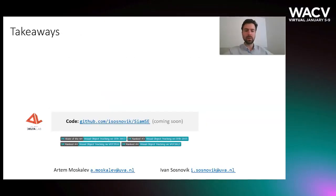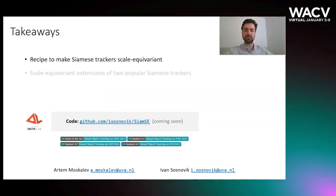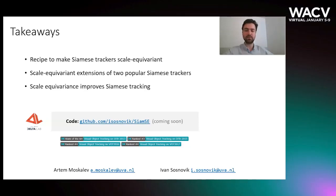To sum up, we propose a recipe to make Siamese trackers scale equivariant. We propose scale equivariant extensions of two popular Siamese trackers and demonstrate that scale equivariance improves Siamese tracking. That's the end of my presentation. Thanks — check our paper and stay tuned for our code.